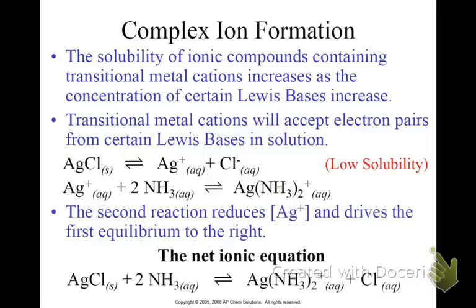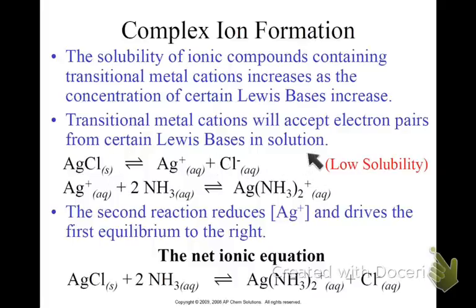Let's talk about solubility as complex ions are formed. AgCl, silver chloride, is considered fairly insoluble. The little it does ionize, it ionizes into Ag+ and Cl-. But if we add ammonia to this, we're going to start forming these complex ions — the silver amine. As this happens, let's think about how Le Chatelier's principle would play into this.